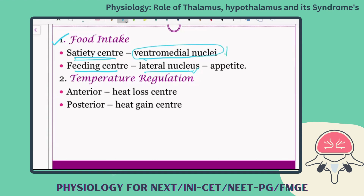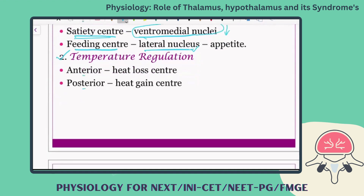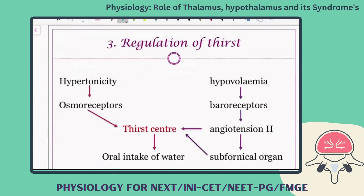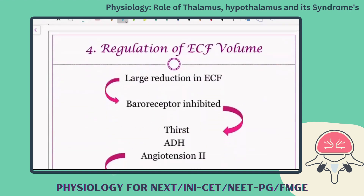If there is deficiency in function, the vice versa will take place. Temperature regulation is controlled by the anterior and posterior nucleus of the hypothalamus. Regulation of thirst — as we have seen in homeostasis — involves increasing the stimulus for the thirst center, inducing oral intake of water.